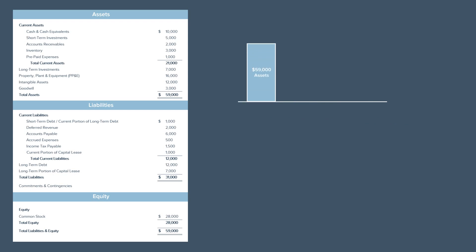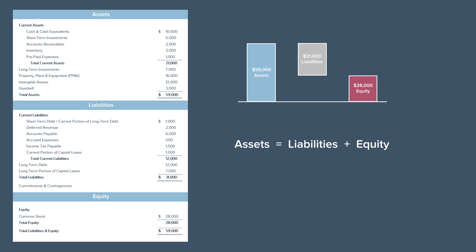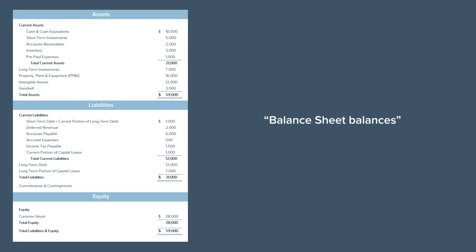Conceptually, of the total value of assets the company controls, whatever is left after paying for the value of liabilities it owes belongs to the owners. Therefore, assets equals liabilities plus equity. This is known as the accounting equation. The total value of assets must be the same as the total value of liabilities and equity. We see that the balance sheet balances when the two numbers equal one another.